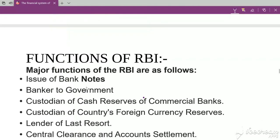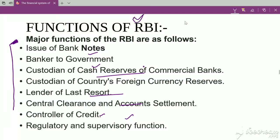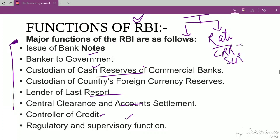Now let's talk about the functions of RBI. RBI performs many functions: it issues bank notes, acts as banker to the government, is the custodian of cash reserves of commercial banks, acts as lender of last resort, provides central clearance, controls credit, and performs regulatory and supervisory functions. From these functions, questions come — particularly about current rates like CRR, SLR, and arranging them in ascending or descending order.